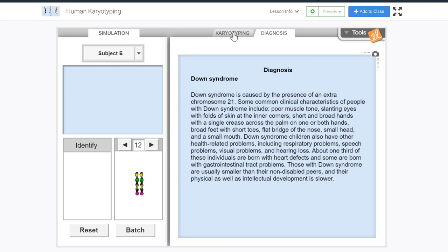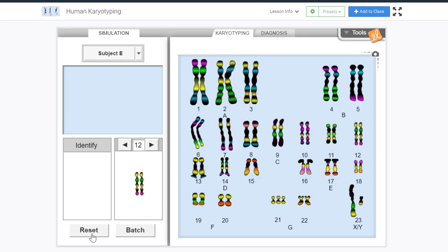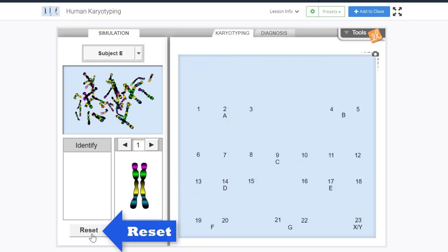The reset button will remove all of the chromosomes from the karyotyping tab and return them to the starting location. As easy as grabbing and dragging we can discover diagnoses or sex of a subject through the matching of chromosomes.